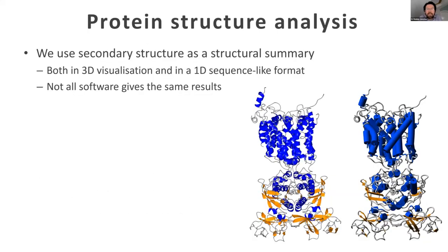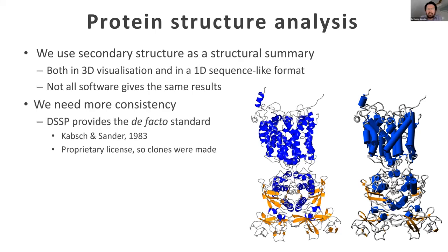Let's look at some of these developments — first, something for protein structure analysis. When you describe a structure, we typically use secondary structure as a structural summary, in a 1D sequence-like format but also in 3D. All the molecular graphics programs allow you to color by secondary structure. But not all these programs give you the same results. Here you have two examples of exactly the same coordinates in two different molecular graphics programs, and you can see the program on the left actually shows much more beta sheet than the program on the right. What we really need is more consistency, and we could have had that because DSSP provides the de facto standard — it's an old program, but still a very good one, developed by Kabsch and Sander in the 1980s. However, it came with a proprietary license, which was sometimes difficult to use, so there are a lot of clones of DSSP around.